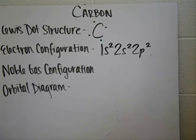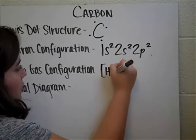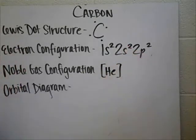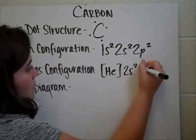And a noble gas configuration is an easier way to do an electron configuration. What you do is you go back and look at the last noble gas that was in your configuration, and for carbon it would be helium. So you put the symbol for helium in the brackets, and then you just continue from where helium was. So it would be 2s2, 2p2.